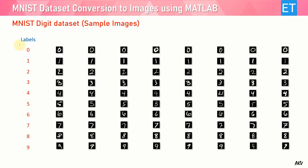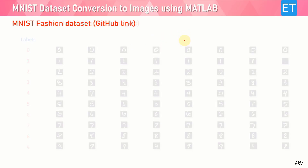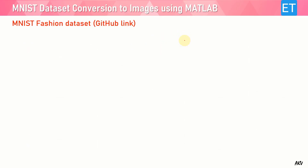This is the glimpse of the MNIST digit dataset of handwritten digits. You can see you get these labels, and you get all these handwritten digits. Each image is a grayscale image of size 28 by 28.